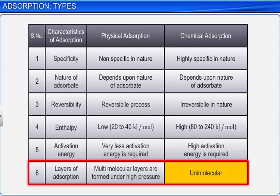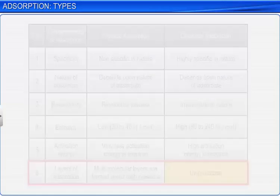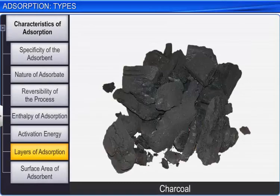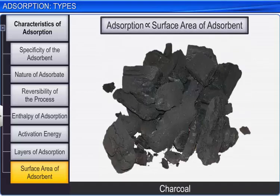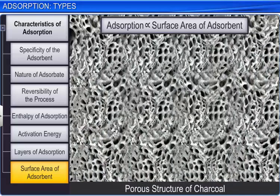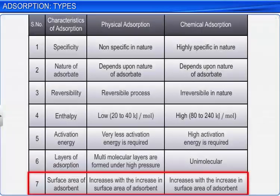Regarding the impact of surface area on adsorption: the greater the surface area, the greater is the adsorption. Therefore, substances with porous structures are good adsorbents. Charcoal is a good adsorbent as it has a porous structure. For both physical and chemical adsorption, the extent of adsorption increases with an increase in the surface area of the adsorbent.